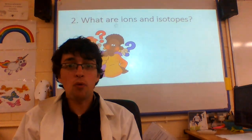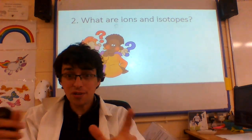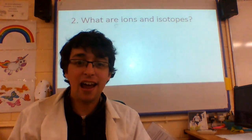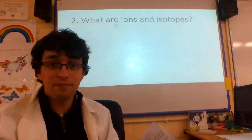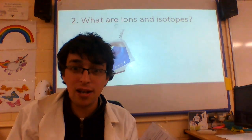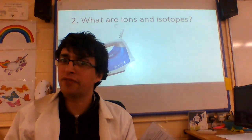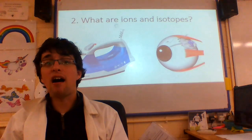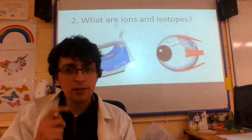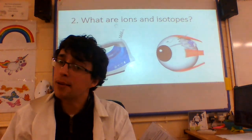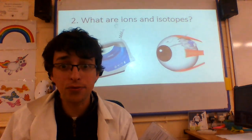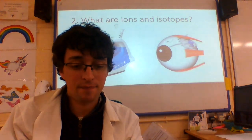So our second question is: what are ions and what are isotopes? Now I know this — before we go any further — an ion is one of these things we use to iron clothes, make it look very smart and proper. An isotope is something to do with your eyes, I think, in tubes. Now, before I get confused, I have a little song that's going to help us understand this a bit better.